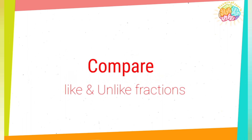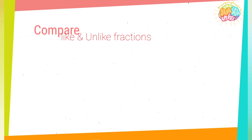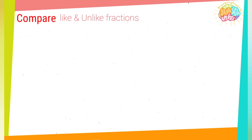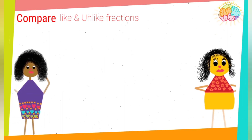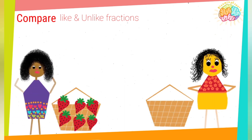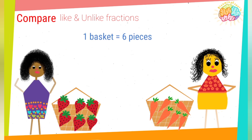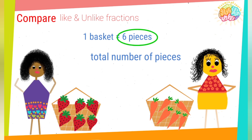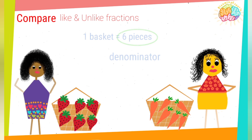Let's now compare. Two friends went to the grocery and picked up two baskets. Each basket has six pieces, so the total number of pieces in a basket, or in a whole, is six — and it is the denominator.